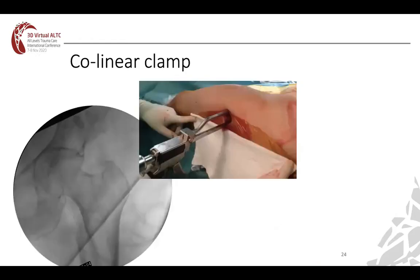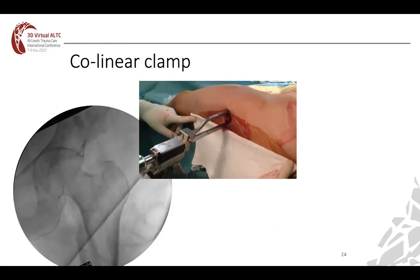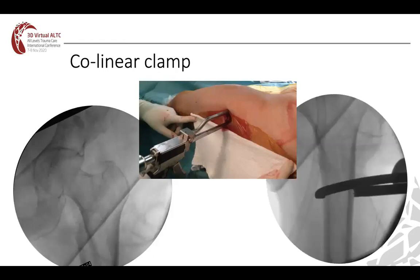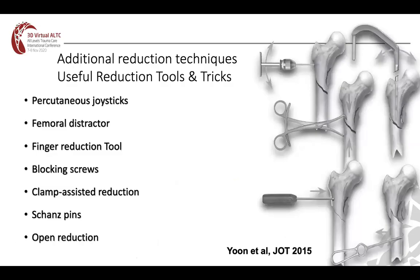Another way to reduce is the colinear clamp — it's a fancy tool, very useful, but it does not exist in my country. Additional reduction tools published in 2015 in the Journal of Orthopedic Trauma included percutaneous joysticks, femoral distractors, finger reduction tool — simply putting your finger to reduce the fracture — blocking screws, clamp-assisted reduction, chains, pins, open reduction, and pushing clamps and hooks.